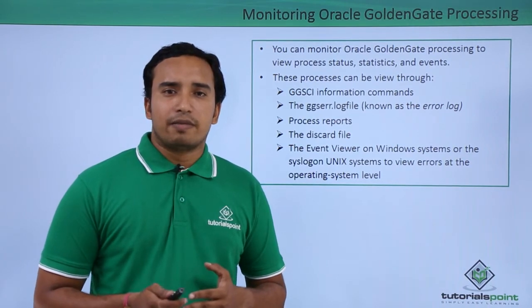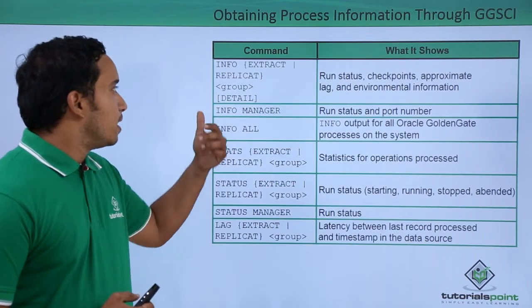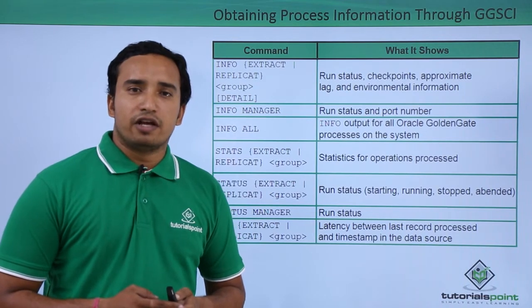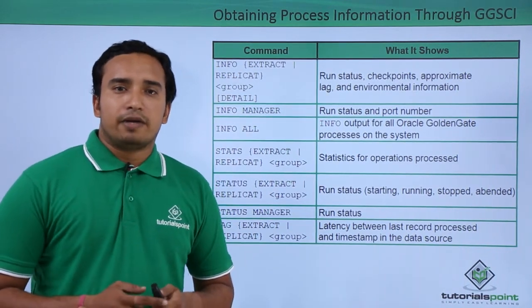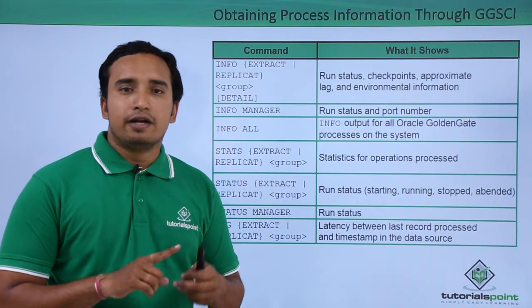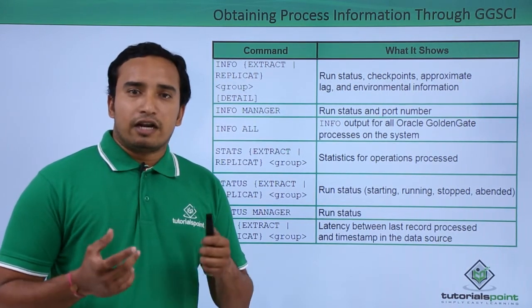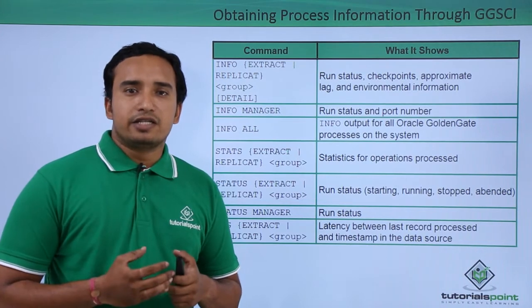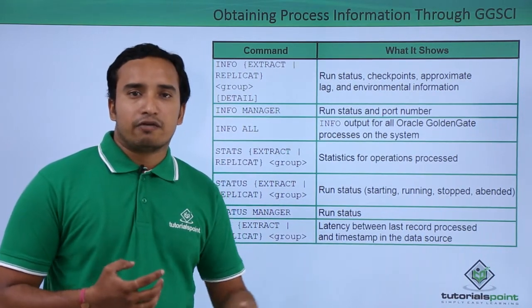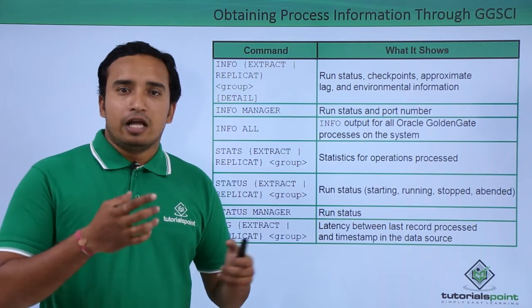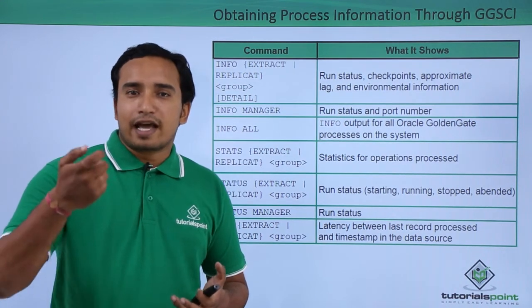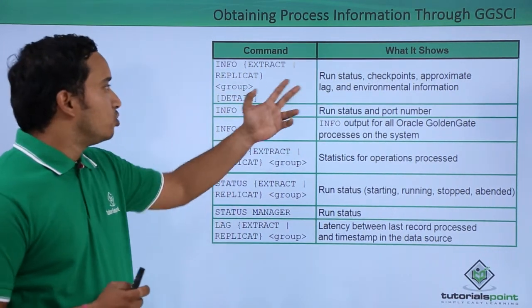Now let us see some of the commands in detail. The first command is the INFO command — INFO EXTRACT or INFO REPLICAT. This gives you the status of the particular process: how long it has been running, whether the status is started, stopped, or abandoned, when the last checkpoint happened in seconds, and if there is any lag. Lag means if the extract has not been extracting from the source database for the last one hour, that one hour is considered as lag. If the Replicat has not been replicating from the trail files to the target database for the last 45 minutes, then the lag is shown as 45 minutes.